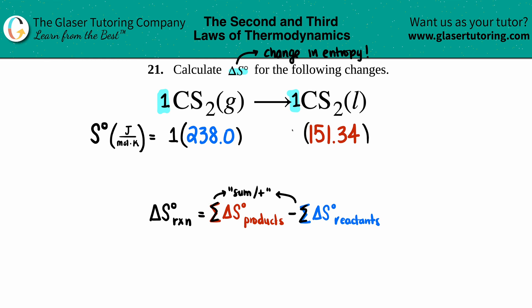Technically this would be times by one, and the same thing here times by one. Just know that if you had a two in front, you would times by two. Now both of them timesing by one is the same number: 238.0 for the reactants and 151.34 for the products.